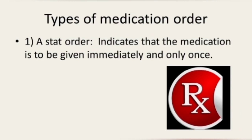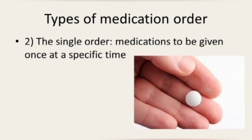Let us learn the types of medication orders. There are mainly four types of medication orders commonly used in a hospital. The first is a stat order — it indicates that the medication is to be given immediately and only once. For example: morphine sulfate 10 mg IV stat.